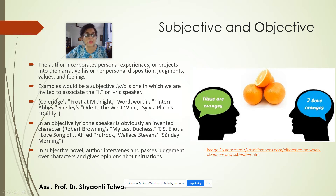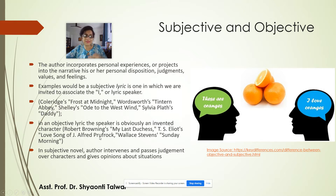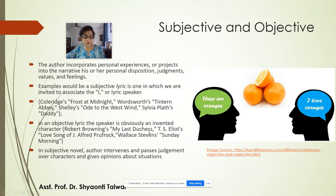Similarly, if you look at T.S. Eliot's Love Song of J. Alfred Prufrock, you will realize the same distancing between the author and the narrator or the lead character of the work. Another example of an objective lyric would be Wallace Stevens' Sunday Morning.